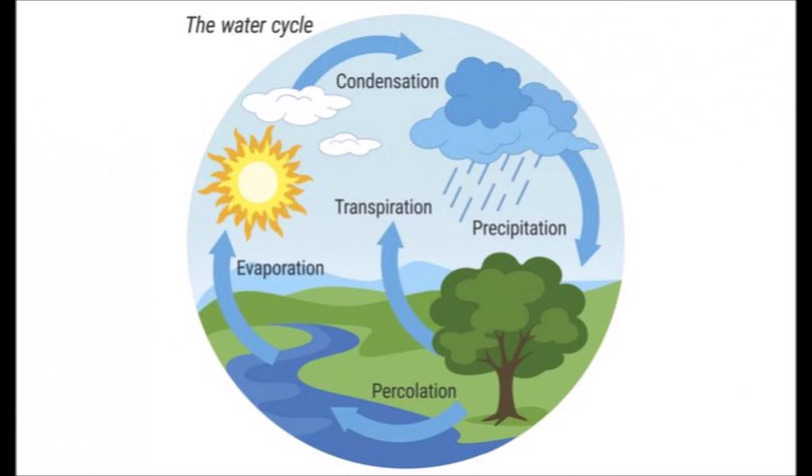As you look at this diagram, you will see that the sun is once again driving the evaporation and transpiration from plants of water. As that water vapor rises into the atmosphere, it's going to condense as the atmosphere gets cooler and fall as precipitation, which then goes back into the ground, percolates into the water table, and runs off into streams and rivers.